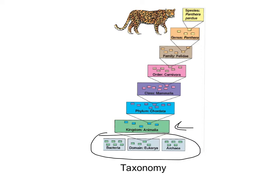Then we have phylum, class, order, family, genus, species — shown here for the leopard. The species name is given by the genus and species level together. For example, humans are Homo sapiens — Homo is the genus, sapiens is the species. For leopards, Panthera is the genus and pardus is the species.